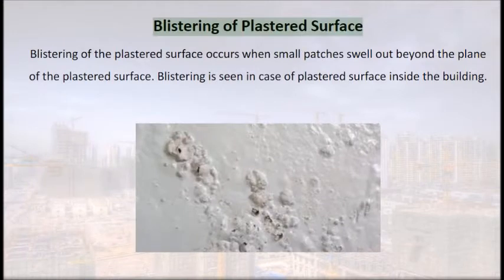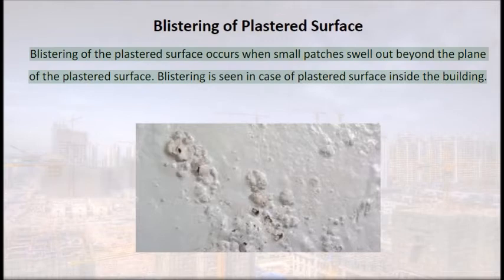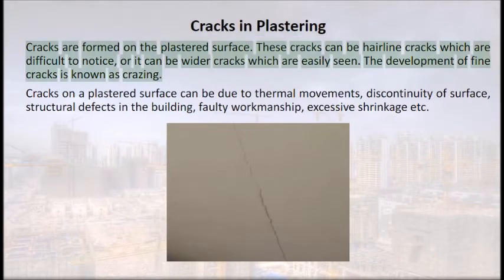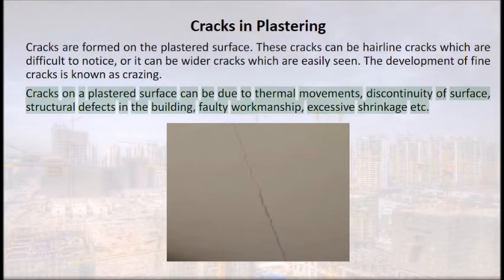Blistering occurs when small patches swell out beyond the plane of the plastered surface, seen especially on interior surfaces. Cracks are formed on plastered surfaces — these can be hairline cracks difficult to notice, or wider cracks easily seen. The development of fine cracks is known as crazing. Cracks on a plastered surface can be due to thermal movements, discontinuity of surface, structural defects, faulty workmanship, or excessive shrinkage.